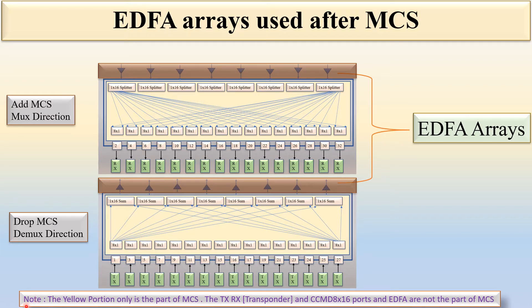Note that the yellow portion is the value part of MCS. The TX/RX transponder, CCMD, 8x16 ports, and ADFA are not part of MCS. The yellow portion is only the part of MCS, which includes a 1x16 splitter and an 8x1 switch.